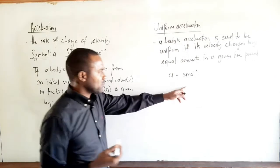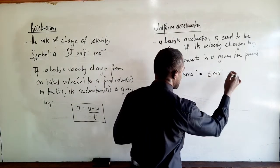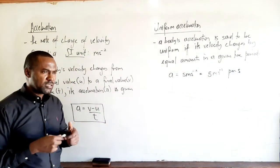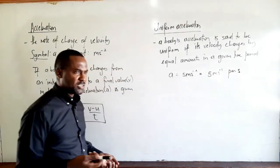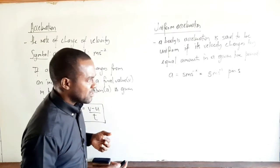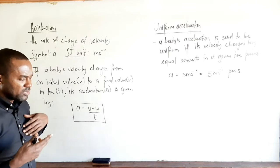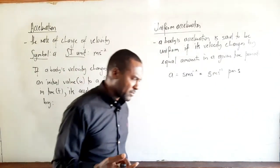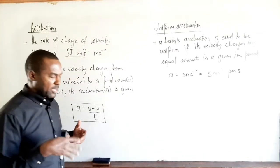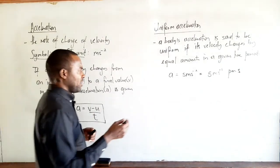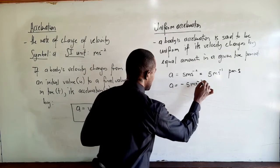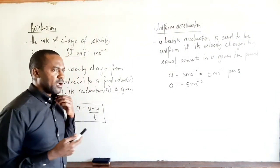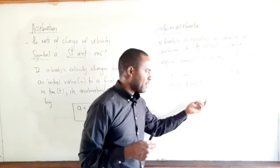For instance, a uniform acceleration of 5 meters per second squared means the body's velocity is increasing by 5 meters per second every second. The acceleration is positive, indicating an increase in velocity in the positive direction. If the acceleration is minus 5 meters per second squared, the body's velocity is decreasing by 5 meters per second every second.